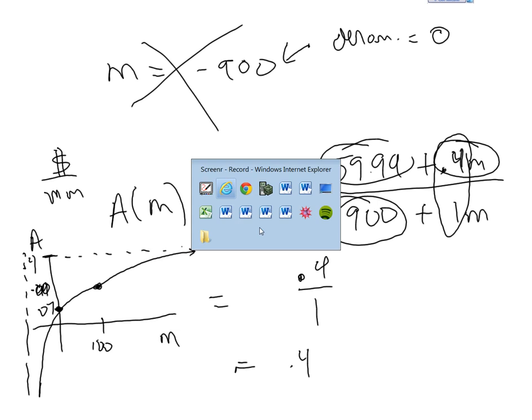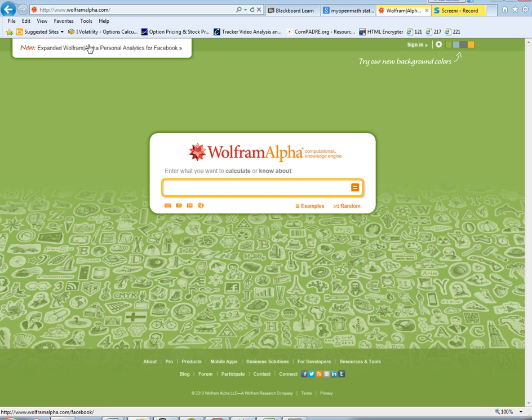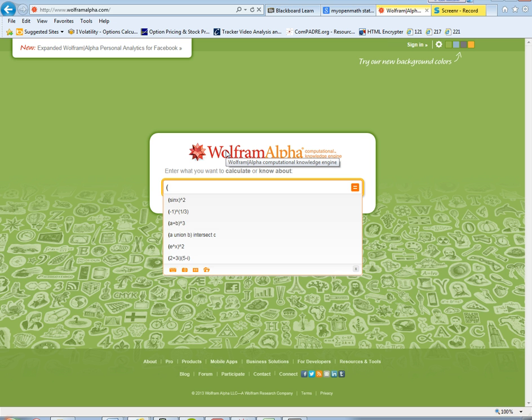Now, we could graph this in our graphing calculator. I'm going to do this in a website that's called wolframalpha.com. And so what I will do is I will just enter in parentheses these two equations.